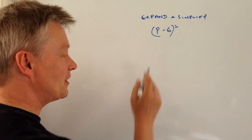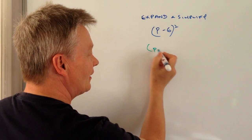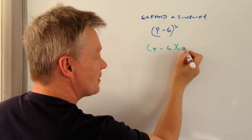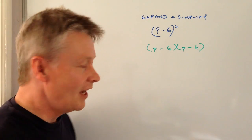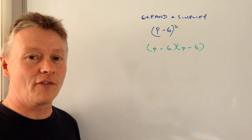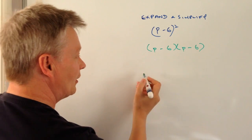Well all we mean by that is p minus 6 squared is exactly the same as saying p minus 6 times p minus 6. And then really it's just a case of working this through.